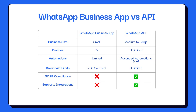On the other hand, the WhatsApp API supports unlimited users and can handle a high volume of broadcasts. When you pair it with the right messaging software like Spur, it allows businesses to manage conversations with advanced automations and AI. It also ensures smooth contact synchronization with e-commerce platforms like Shopify and CRMs, along with other advanced features.